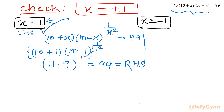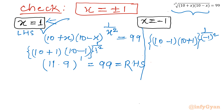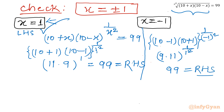Now for x equals negative 1: LHS becomes (10 minus 1)(10 plus 1) to the power 1 over (negative 1) squared, which is 9 times 11 to the power 1 over 1, giving 99 to the power 1 which equals 99 — our RHS. Hence this value is also true and verified.